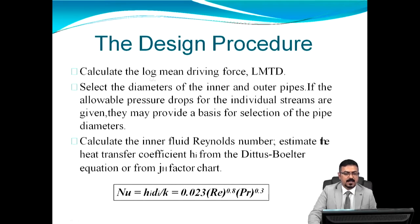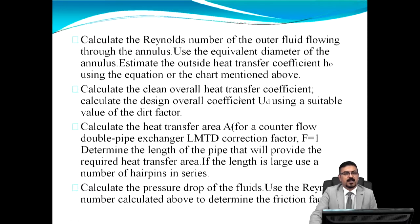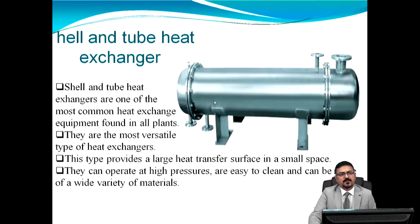The design procedure for a double pipe heat exchanger involves the following steps: calculate the log mean temperature driving force; select the diameters of the inner and outer pipes — if allowable pressure drops for individual streams are given, they may guide selection of pipe diameters; calculate the Reynolds number of the outer fluid flowing through the annulus; calculate the clean overall heat transfer coefficient; calculate the heat transfer area; and calculate the pressure drop of the fluids.